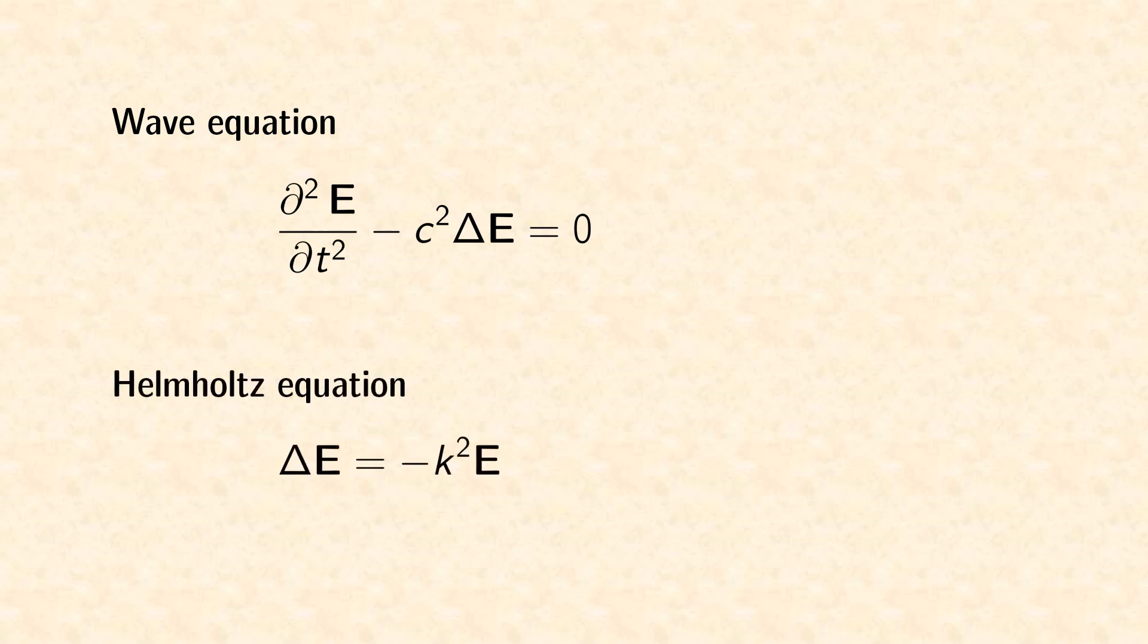When we insert the harmonic wave into the wave equation, we receive the so-called Helmholtz equation. In this equation, the wave number is the quotient of the angular frequency and the speed of light.